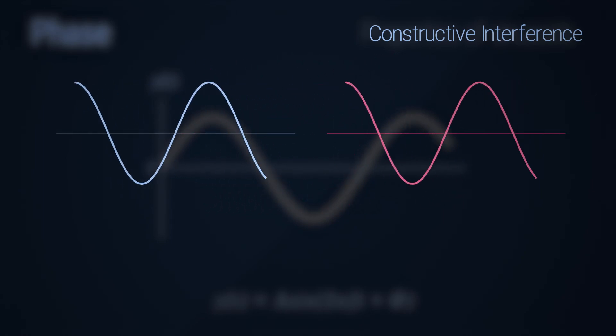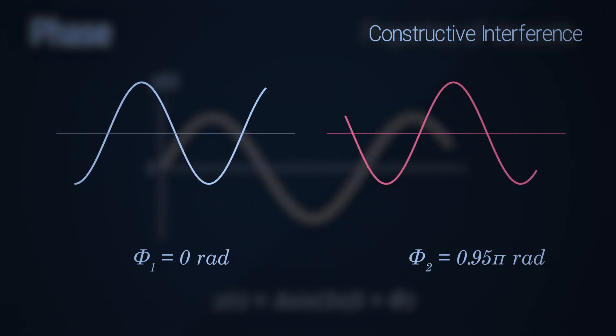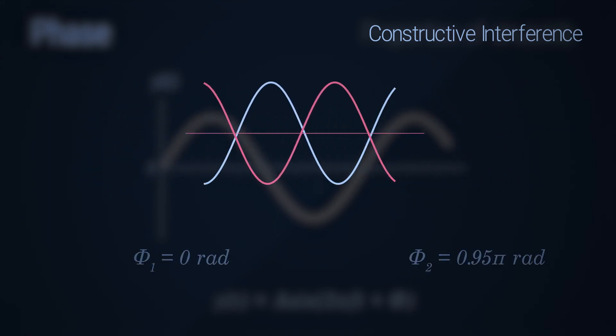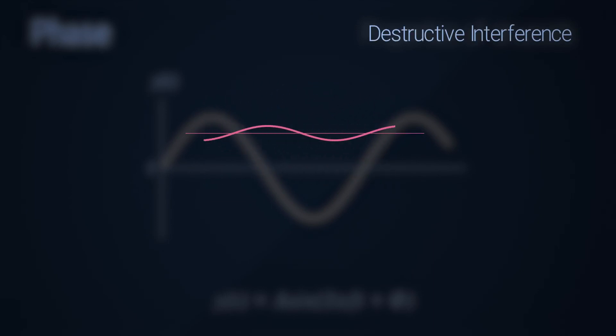Now let's change the phase offset of one of the waves to be close to pi radian, but not exactly pi radian. We hear a significant reduction in volume, and the waves are said to be destructively interfering with each other.